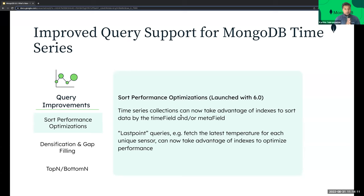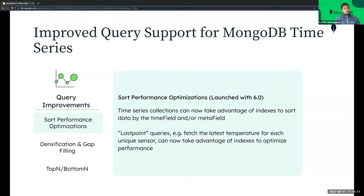The final improvement for time series collections is query improvements. Time series collections can now take advantage of indexes to sort data by the time field and/or meta field. So with temperature sensor indexes built earlier, sort operations can now take advantage of those indexes. Last-point queries — like finding the latest temperature for each sensor — can now take advantage of this optimization to be much faster. We'll talk about other query improvements like operators and densification when we discuss the aggregation pipeline. If you want to go in depth on time series collections and use cases, you can go to our YouTube channel — Michael Darguelo has a really impressive MongoDB World talk on the topic.